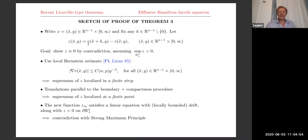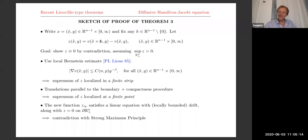We do translation in the tangential direction. This is quite natural because we want to show the solution depends only on the variable y = x_N. By contradiction, assume one tangential translation has a positive supremum. The first step is to use Pierre-Louis Lions' local Bernstein estimate, which gives a bound that is singular at finite distance from the boundary but decays when you go far away from the boundary.